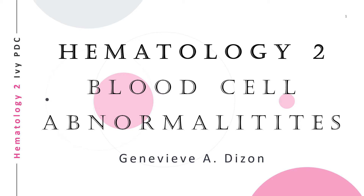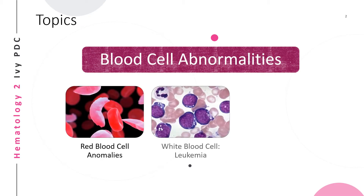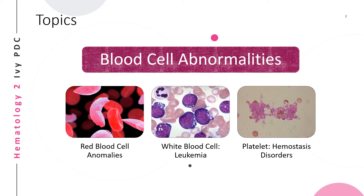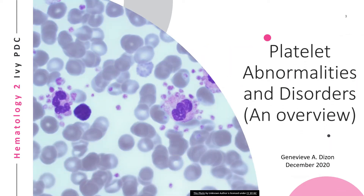Hello everyone, this video is about hematology 2, where we will be discussing abnormalities about the blood cells — the red blood cells, white blood cells, and the platelets. In this video, we will discuss the platelet abnormalities and disorders. The red blood cell and white blood cell abnormalities will be discussed in two different videos.